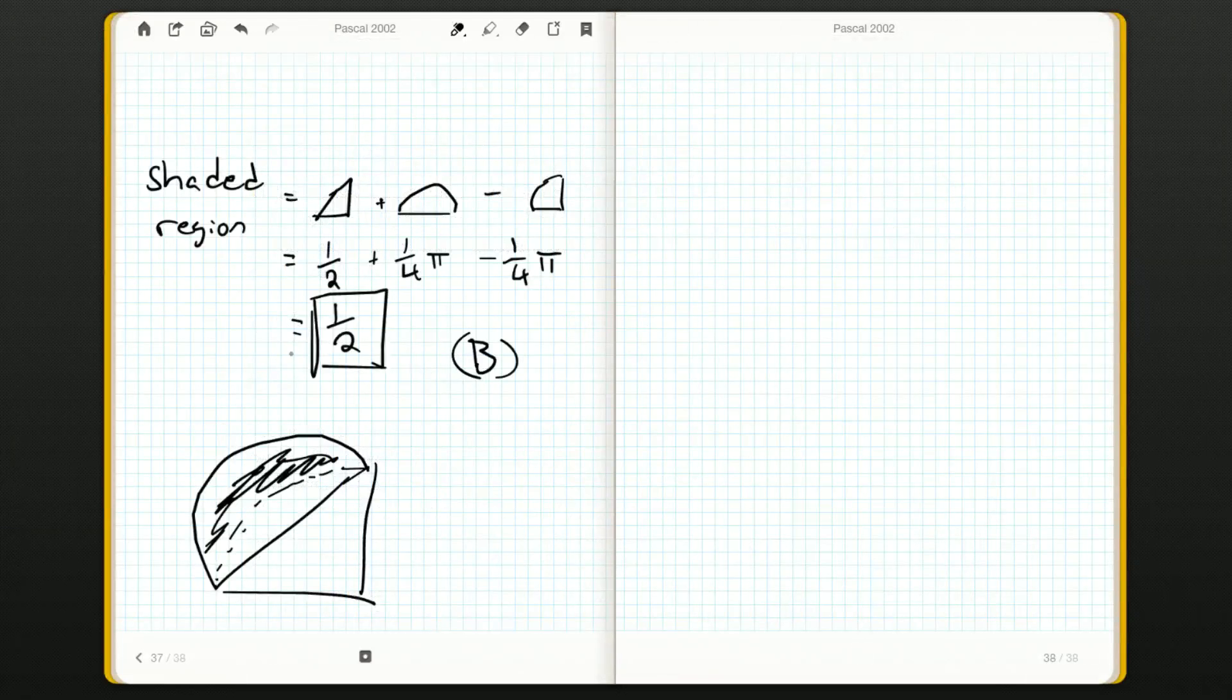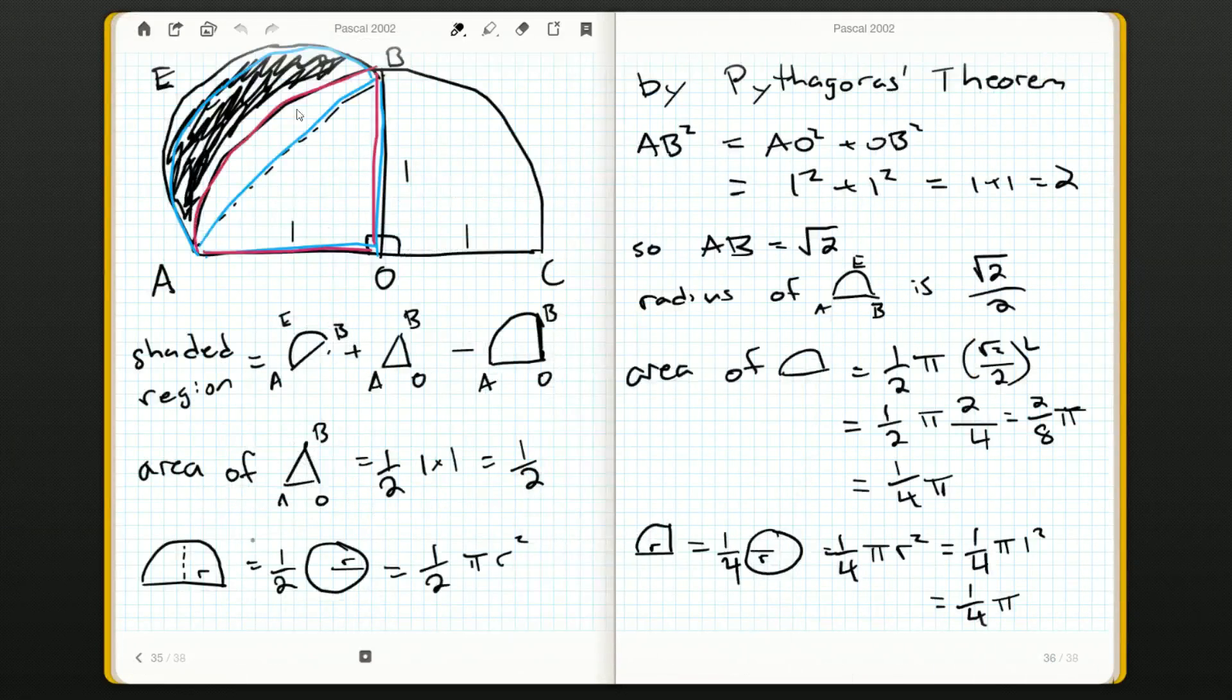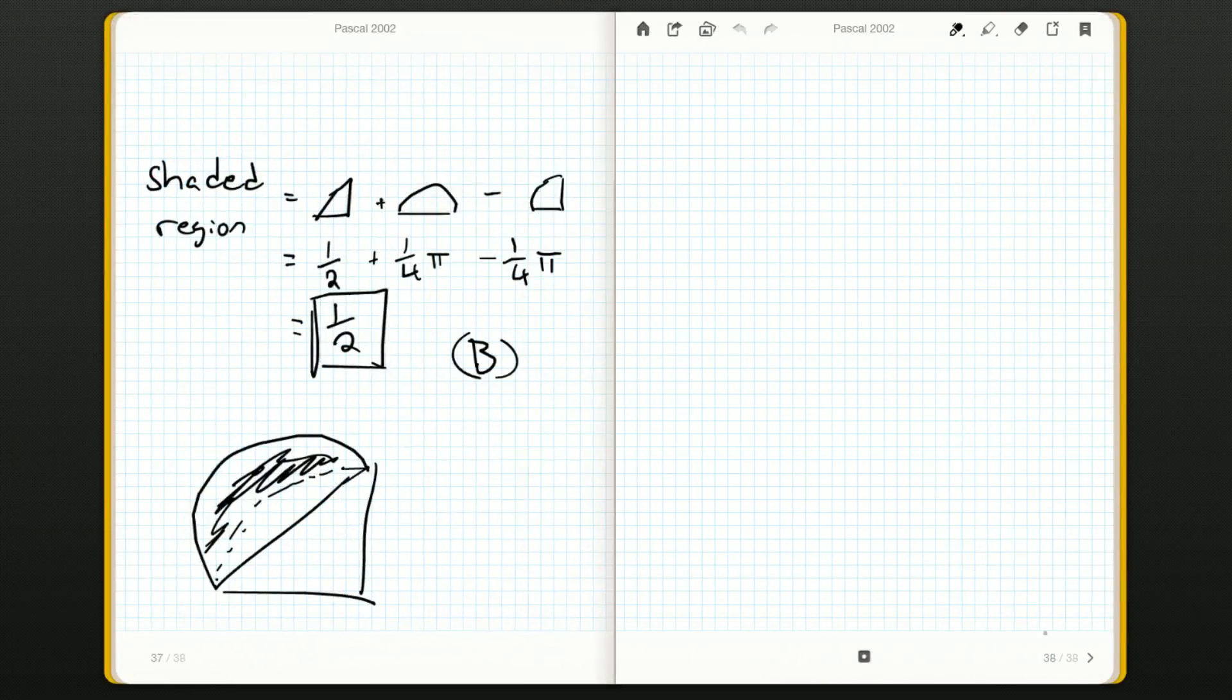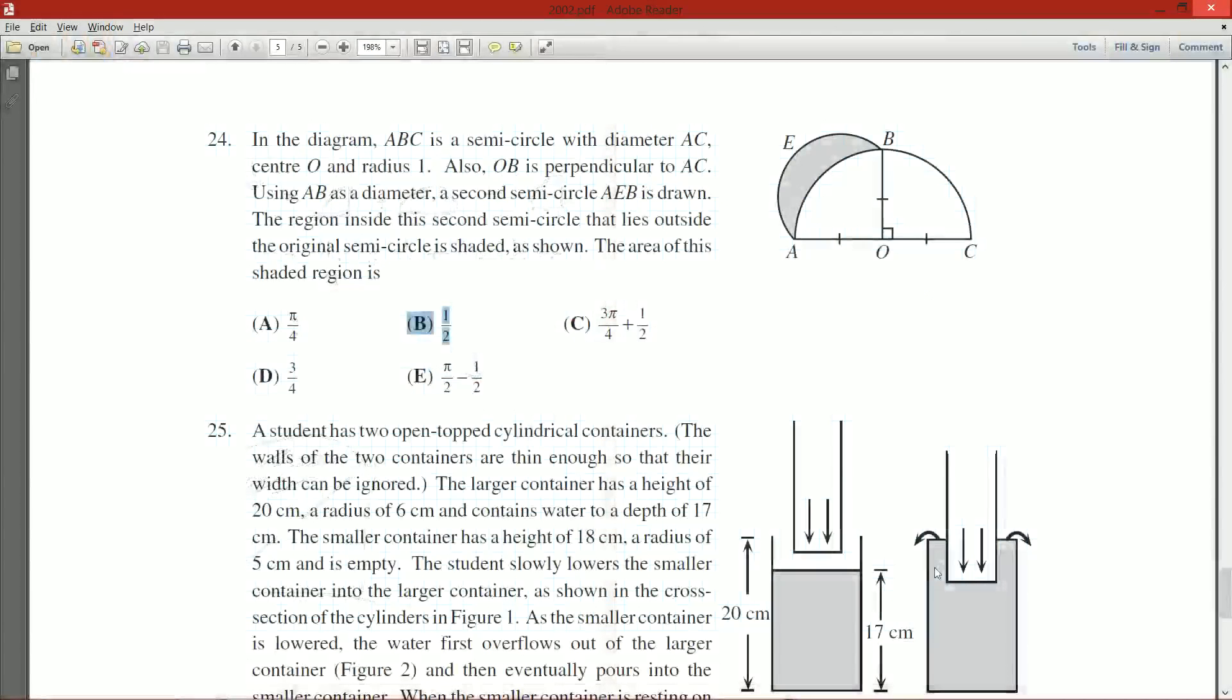I really like these questions because they're always a hunt for which geometric shapes am I putting together in what order. When you think about them as let's get the shaded region as a difference or a sum of really nice objects like triangles, rectangles, and quarter circles, when you think of it like that, the question becomes so much easier. These questions might seem overwhelming, but once you look at them in that light of just adding and subtracting nice geometric shapes from one another, I find these questions to be a bit of a breeze.